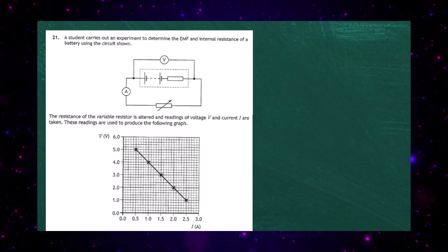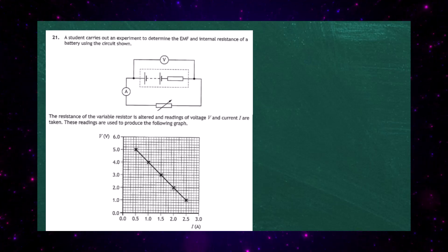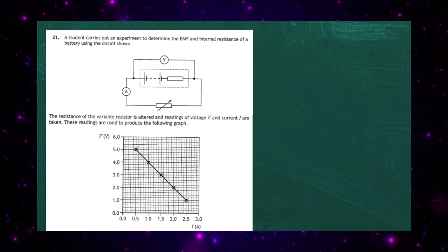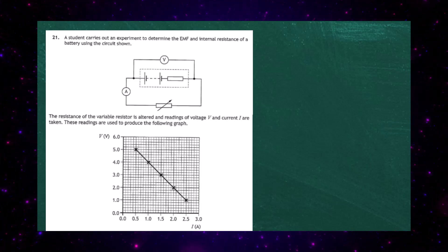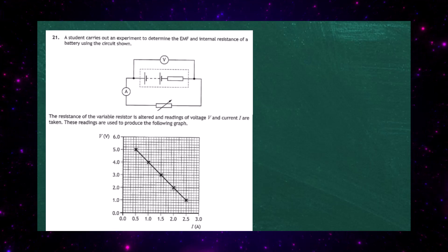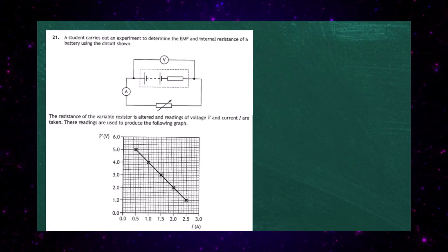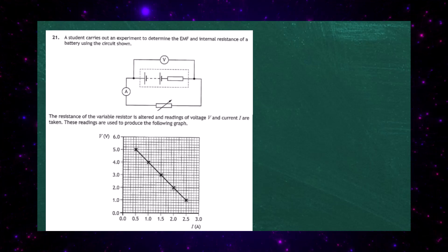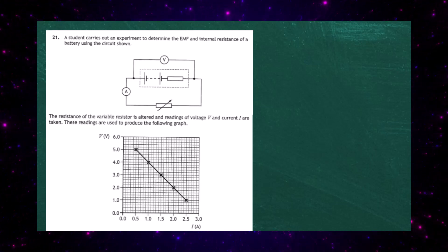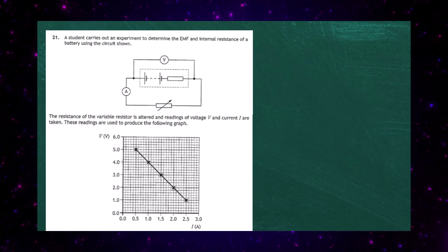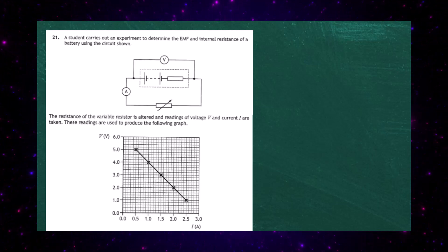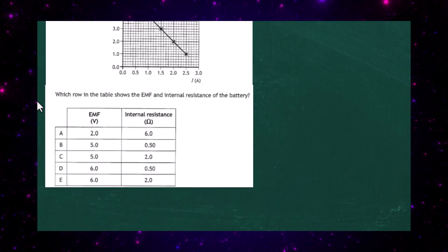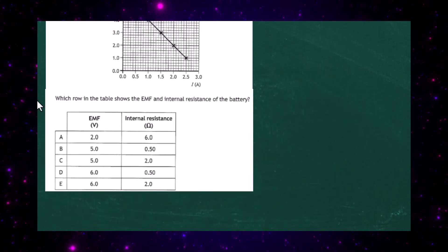Question 21 from Paper 1 of the 2023 Higher Physics Examination from the SQA. A student carries out an experiment to determine the EMF and the internal resistance of a battery using the circuit shown. The resistance of the variable resistor is altered and readings on the voltage V and the current I are taken, then used to produce a graph. We're asked to find the EMF of the cell and the internal resistance.